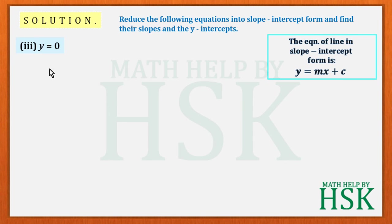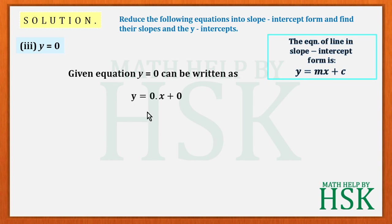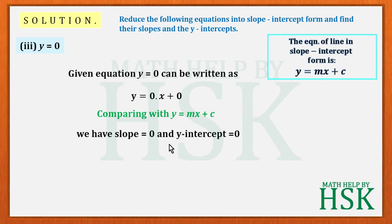For the third part, the equation is y = 0. There is hardly anything to solve, so I rewrite this as y = 0·x + 0. The first zero is written as 0 times x so that all three terms of the slope-intercept form are present. The coefficient of x, which is zero, is the slope, and the constant zero is the y-intercept.